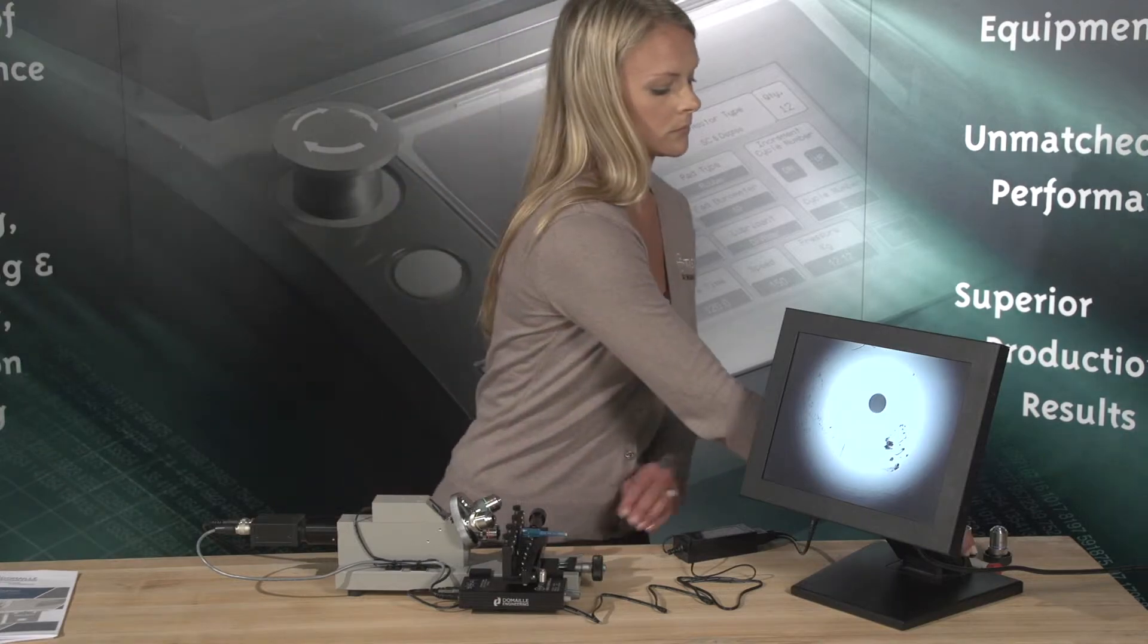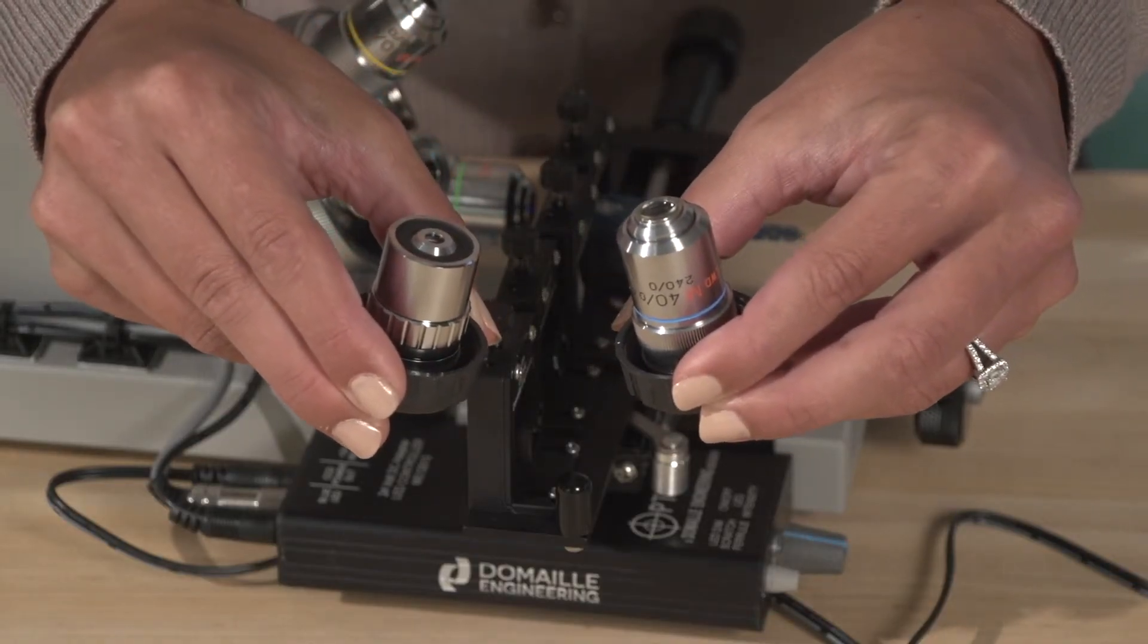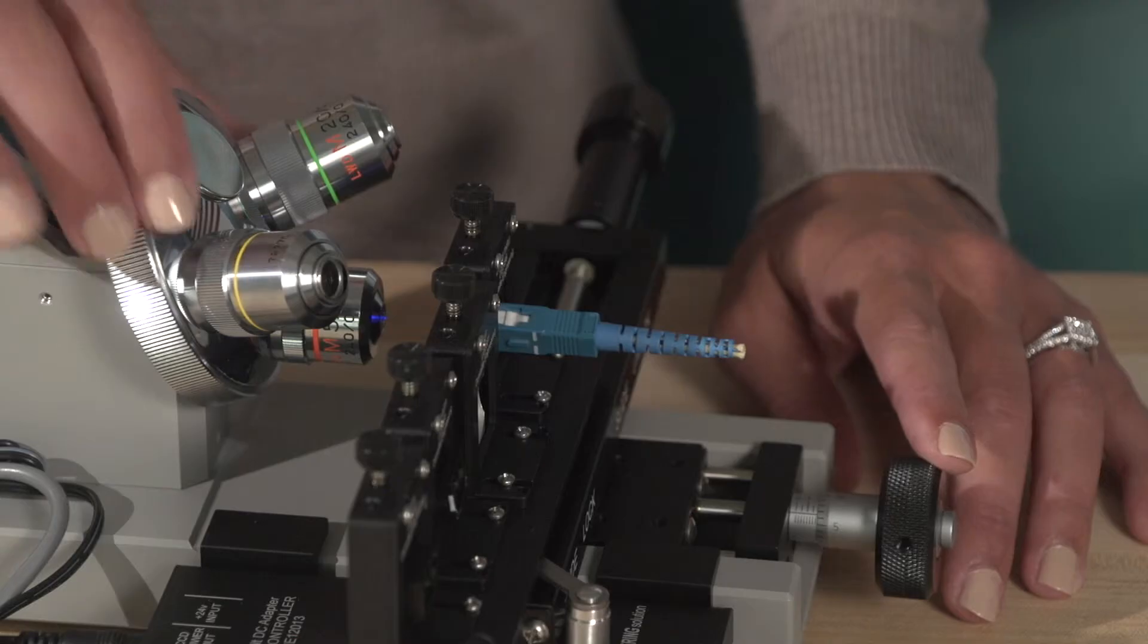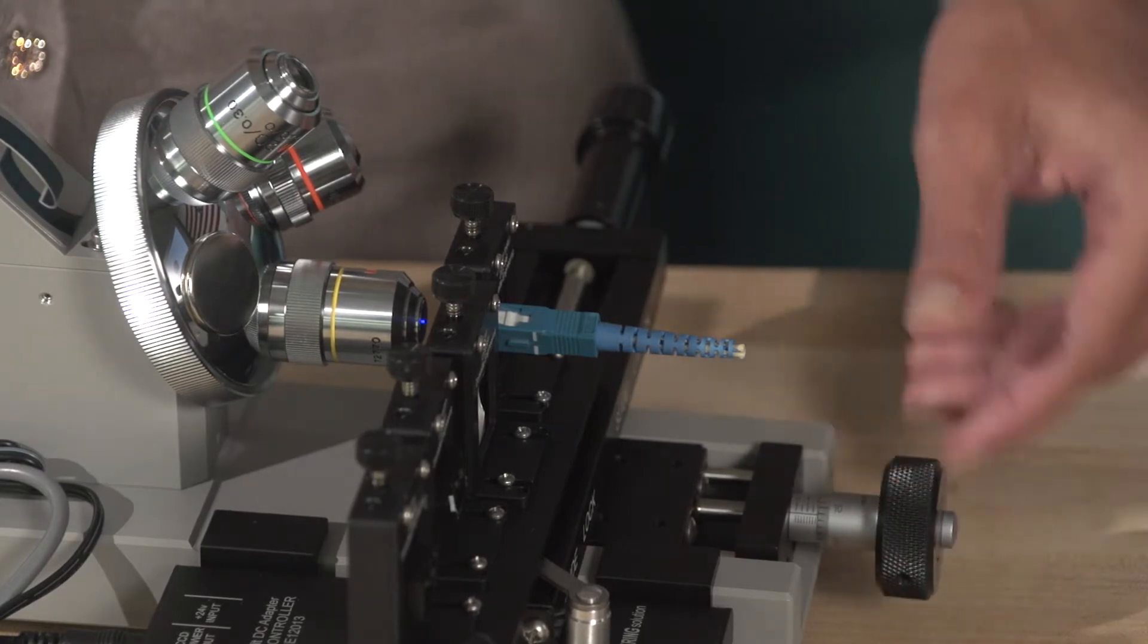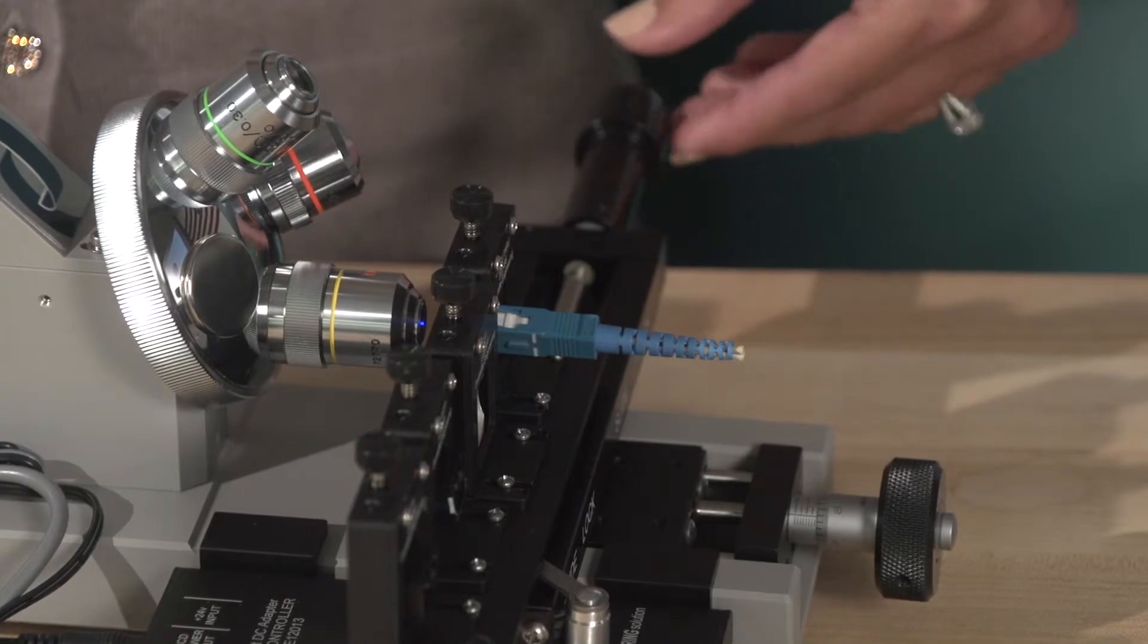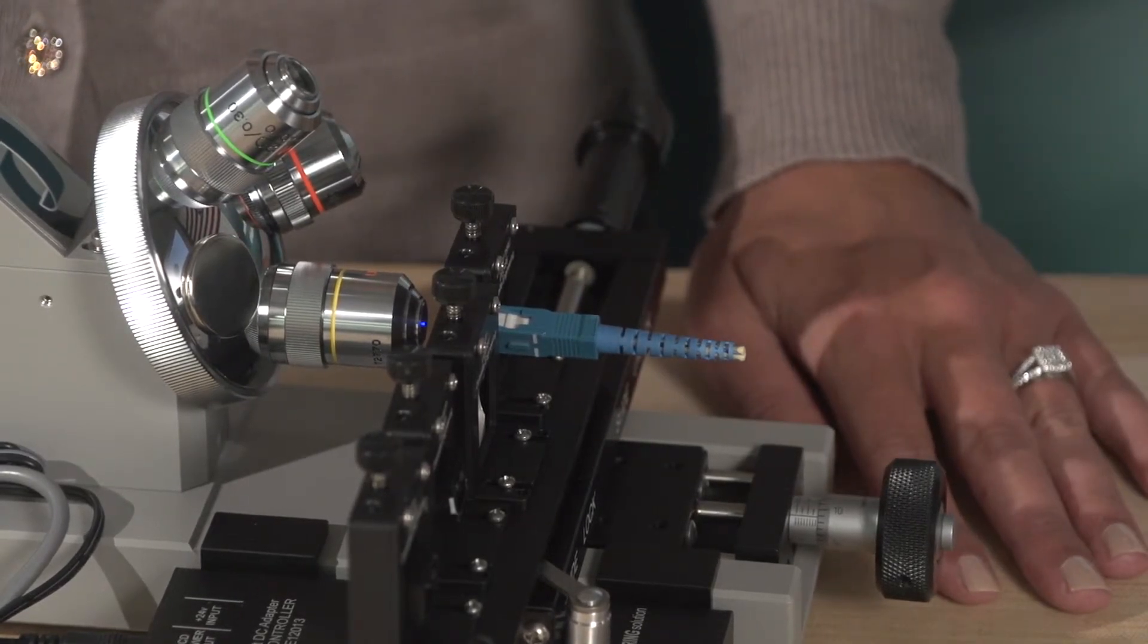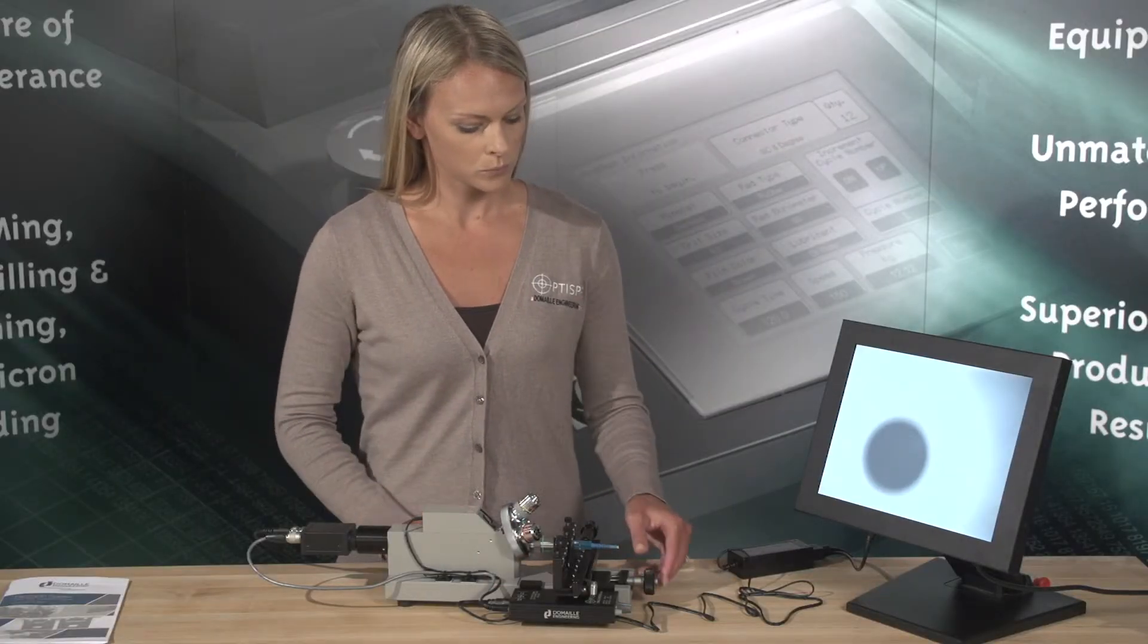Optional 3.3X and 40X objectives are available. Once the image is set up, centered and in focus using the 5X objective, turn the turret to the 10X position and repeat the focusing procedure. Once in focus, center the fiber using the adjustment knobs on the adapter and linear adapter slide. Repeat again if you desire to view the fiber at other magnifications.